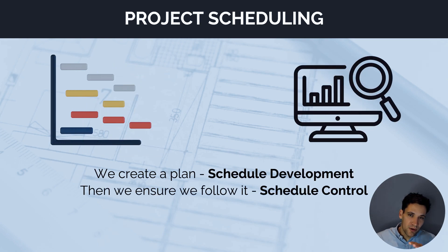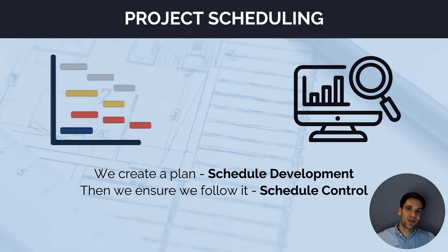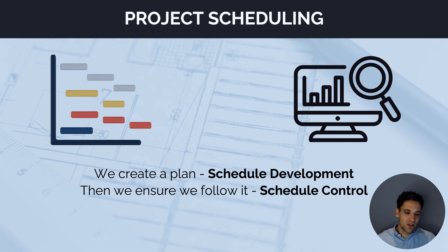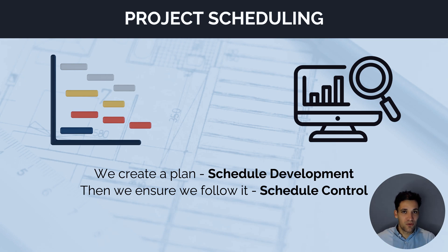There are two principal ways we do this, which are the two core components of project scheduling. We need to create a plan — a plan of how we're going to deliver all the project work, what sequence we're going to do the tasks in, what order they need to be done, how long we're going to take, and what methodology we're going to use. Then after we've created a plan, we need to follow it — implement the schedule, monitor and control performance to check the work matches what we said we'd do, and if there are variances from the plan, we address them.